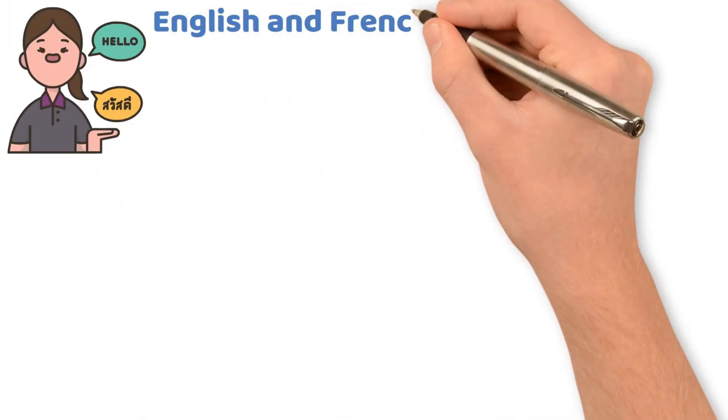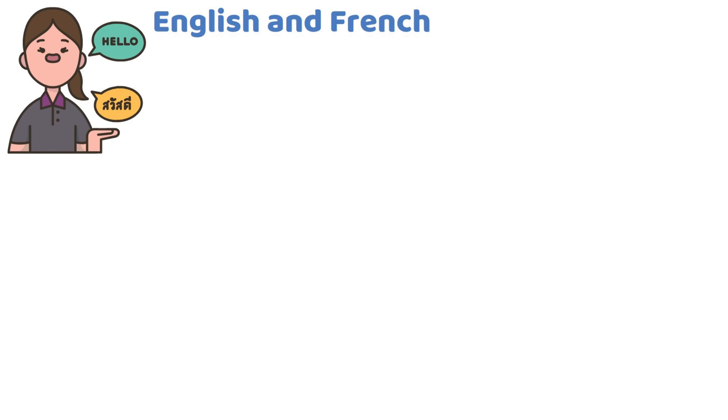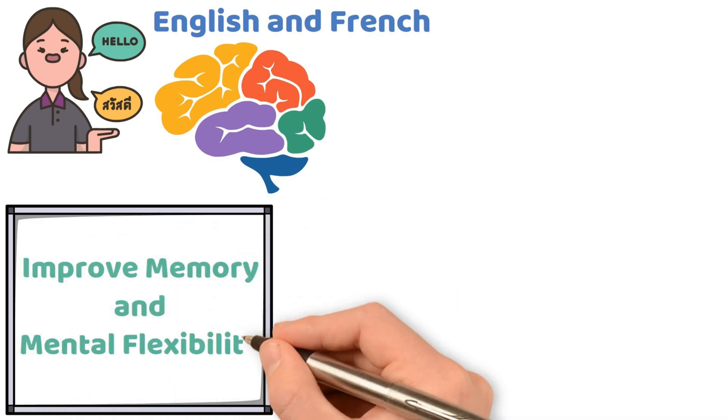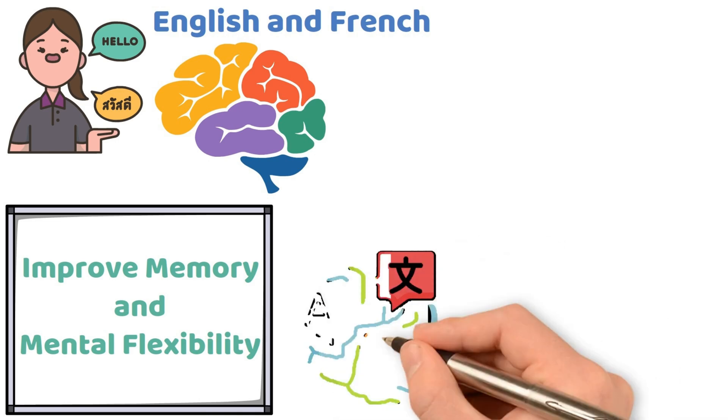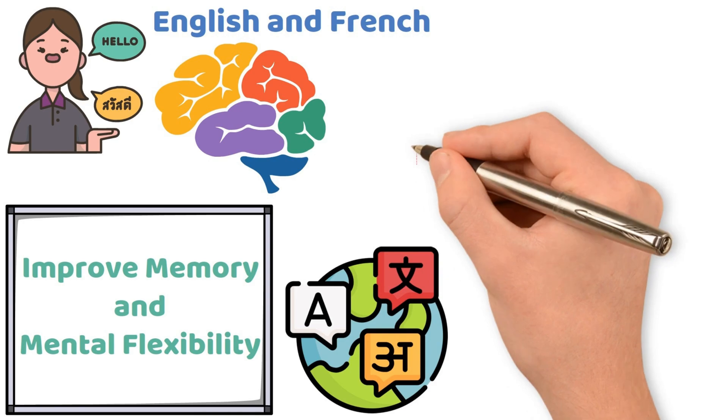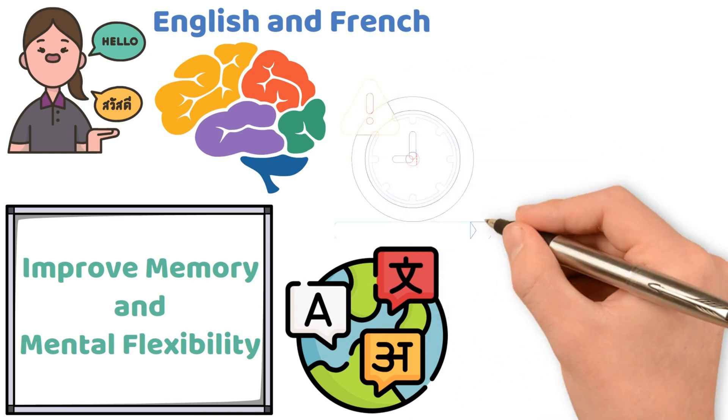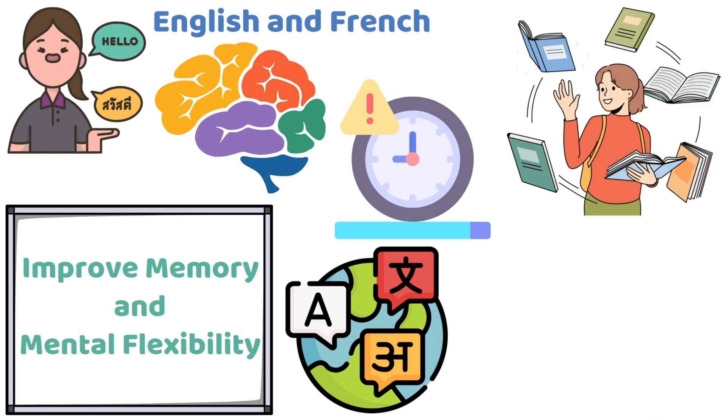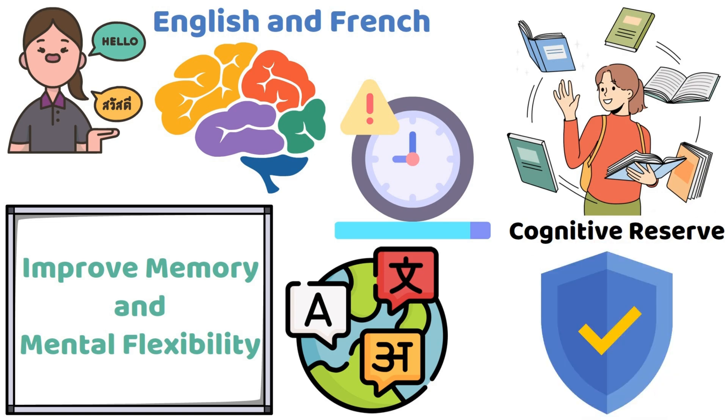For example, think of a bilingual person switching between English and French in a conversation. This rapid toggling engages multiple parts of the brain, which helps build pathways that improve memory and mental flexibility. It's like lifting weights for your mind. More importantly, learning a second or third language has been shown to delay the onset of dementia and Alzheimer's disease by years. This is because the process of learning and using different languages helps build cognitive reserve, a kind of mental resilience that protects against cognitive decline as we age.